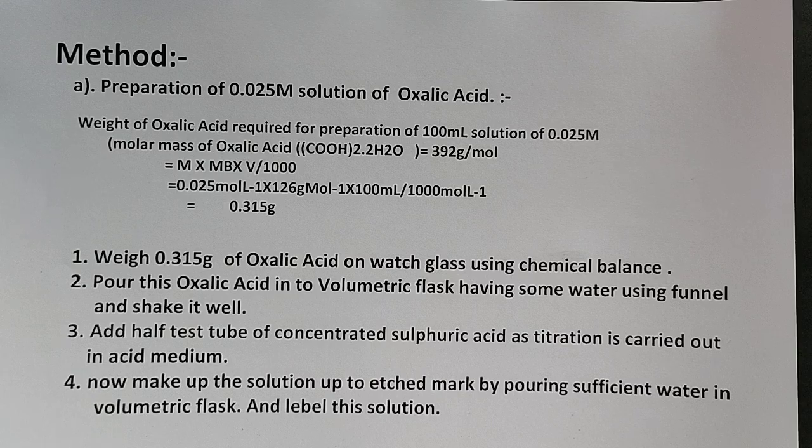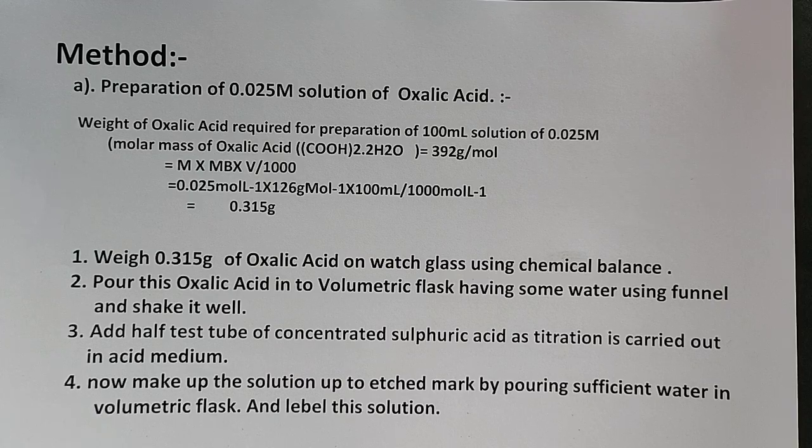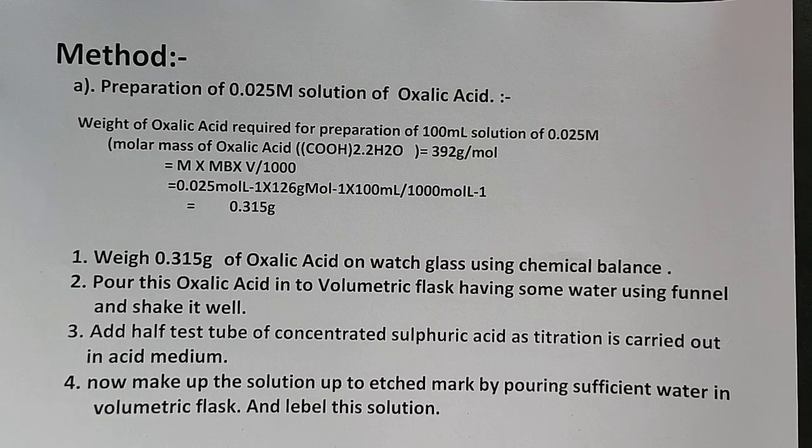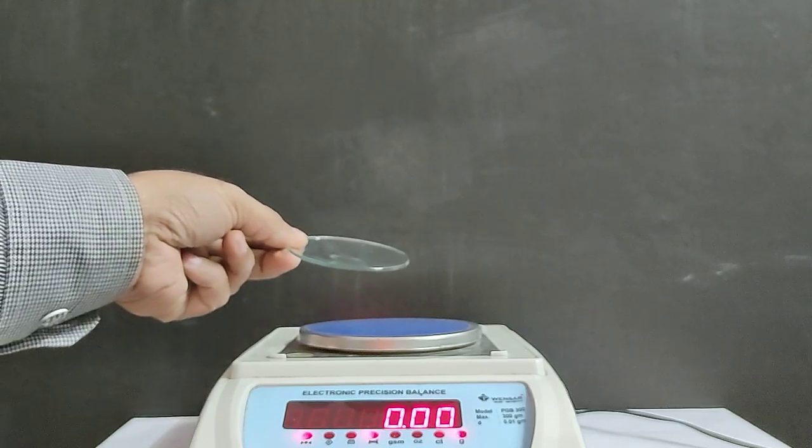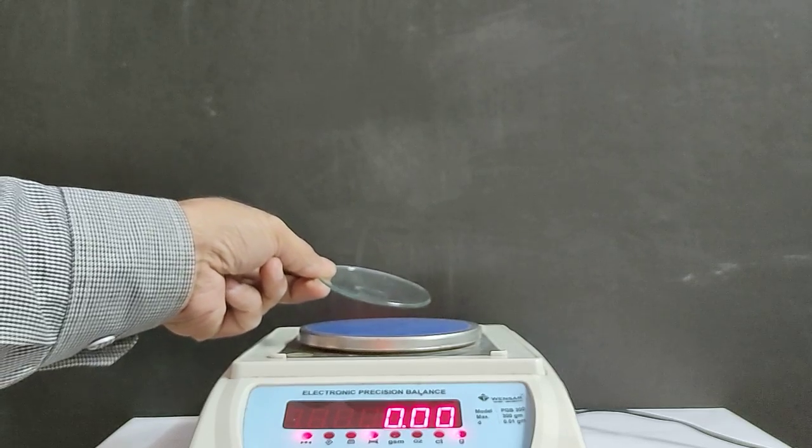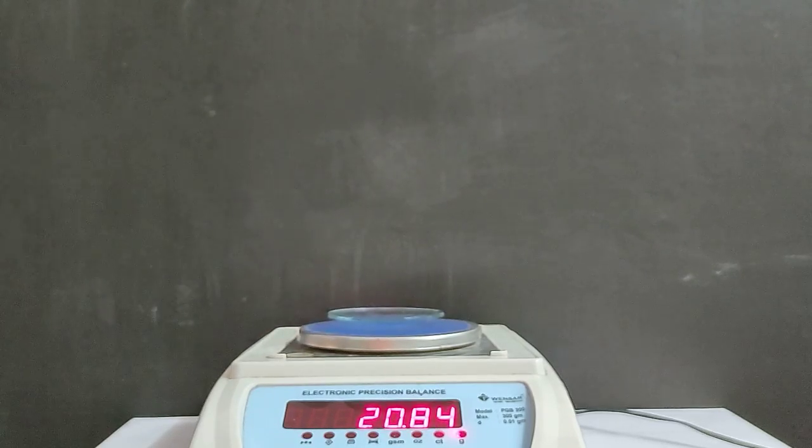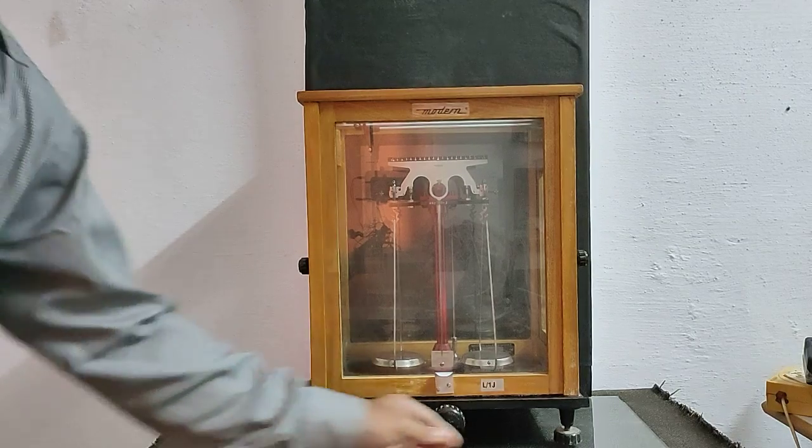That is coming 0.315 gram. So we have to weigh 0.315 gram of oxalic acid using chemical balance. Find the weight of watch glass by rough balance, and it is coming 20.85 gram.